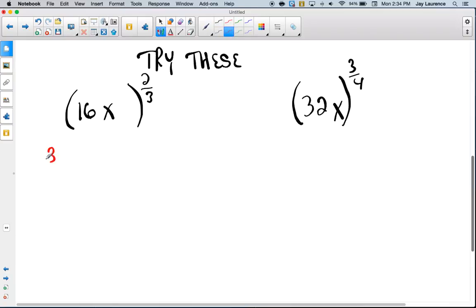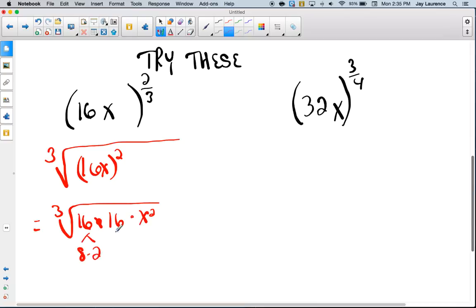So, I'm going to need a cubed root of 16x squared. And so, that'll be the cubed root of 16 times 16 times x squared. And I'm going to think about 16 as 8 times 2. And if I take the cubed root of 8, I get 2. And this cubed root of 8 is 2. So, therefore, there's going to be a 4 out front. I hope you don't mind. I skipped a step there. And then I'm going to have 4 on the inside times x squared.